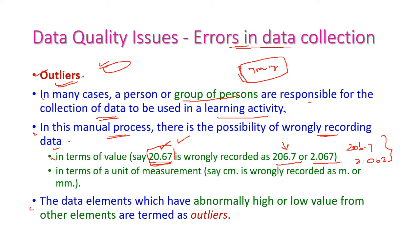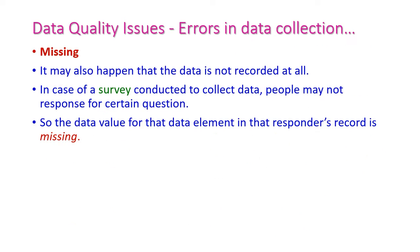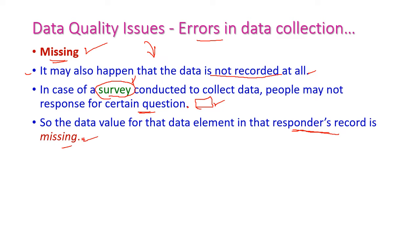As already mentioned, when it comes to age, if the age is 4, this is an outlier. If the age is 42, this is also an outlier. The second error in data collection is missing values. Some data may not be recorded. In the case of a survey, some people may not respond to certain questions. For example, in a forthcoming election, which party were you going to vote for? Many people will not be ready to answer such a question. Hence, those values will be missing for those responders' records. This is called missing data.